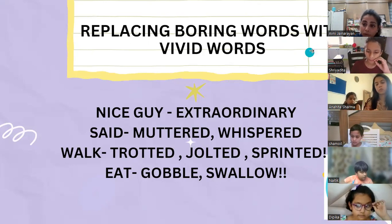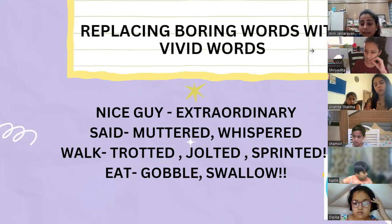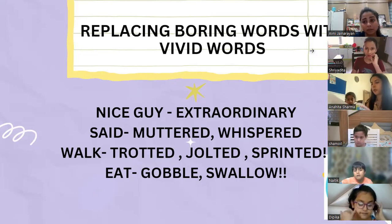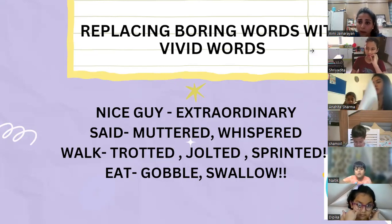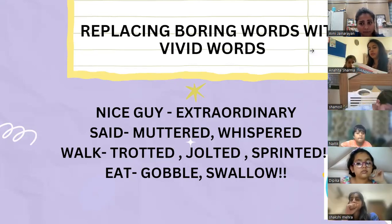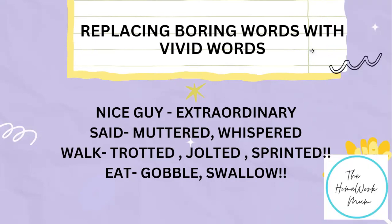For instance, if in my draft I have introduced a character as a 'nice guy,' during editing we will replace 'nice' — which is an adjective — with something like 'extraordinary' or another positive adjective. Instead of 'said,' kids should be aware we shouldn't use it too often, so we can say 'muttered,' 'whispered,' and many more said-words.